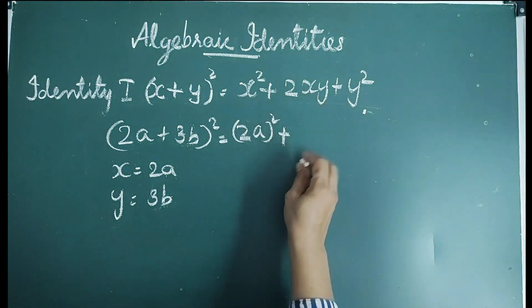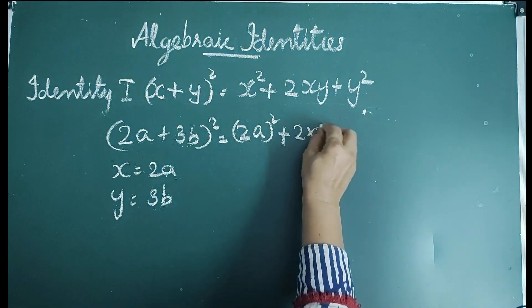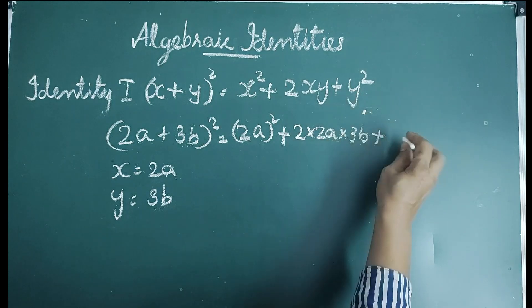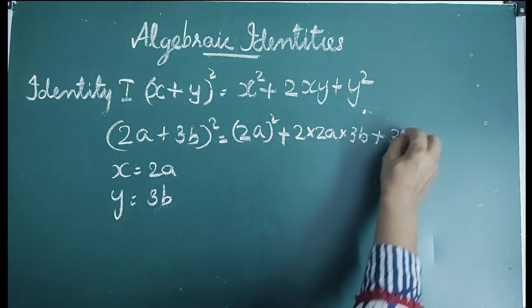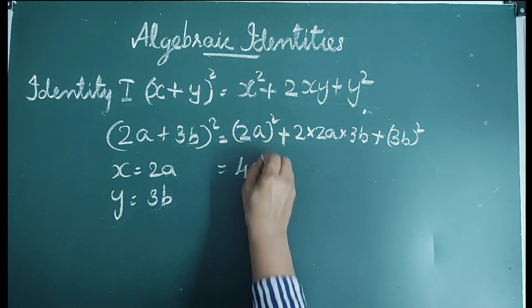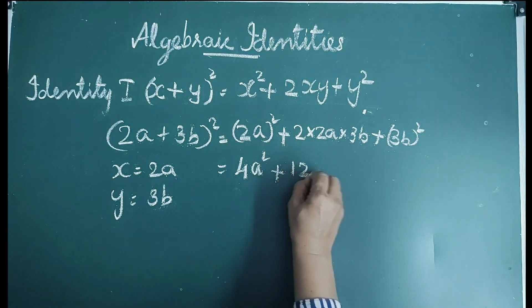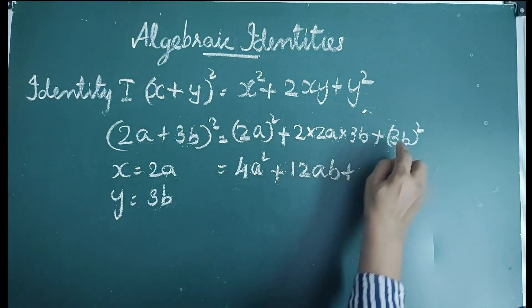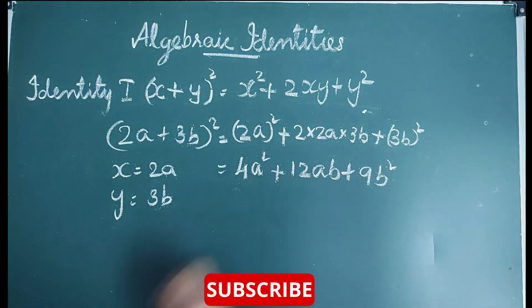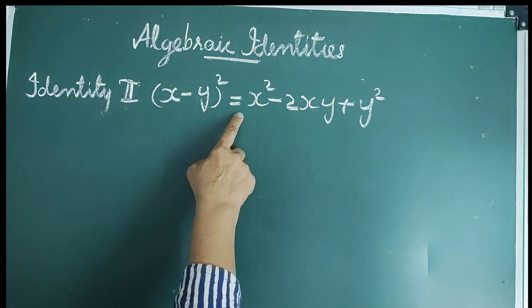Continuing: 2xy is 2 × 2a × 3b, and y² is (3b)². That equals 4a² + 12ab + 9b². The second identity is (x − y)² = x² − 2xy + y².